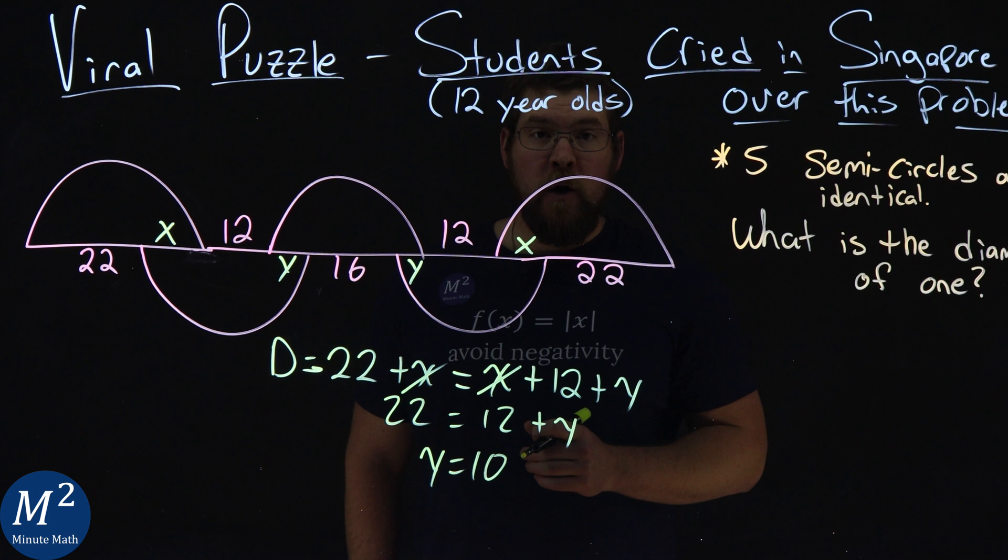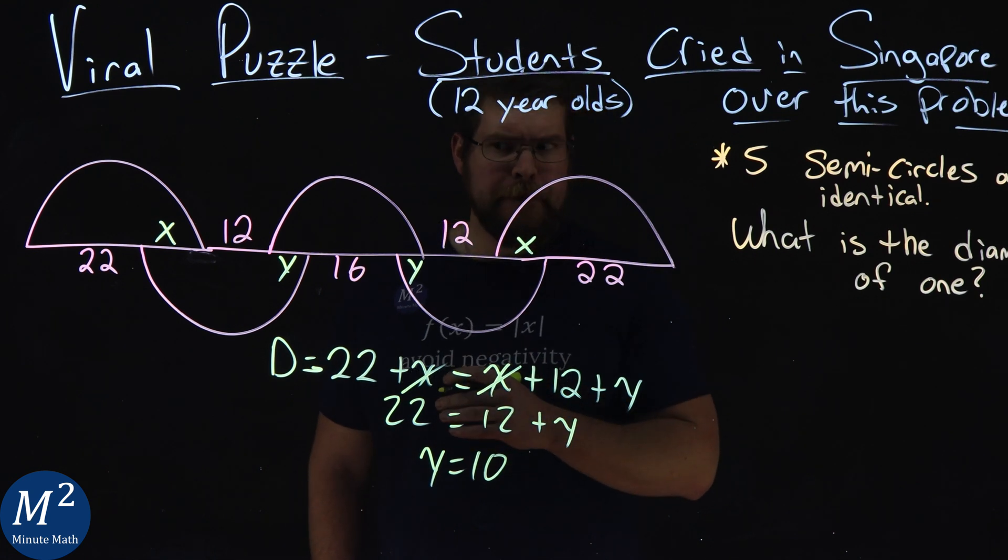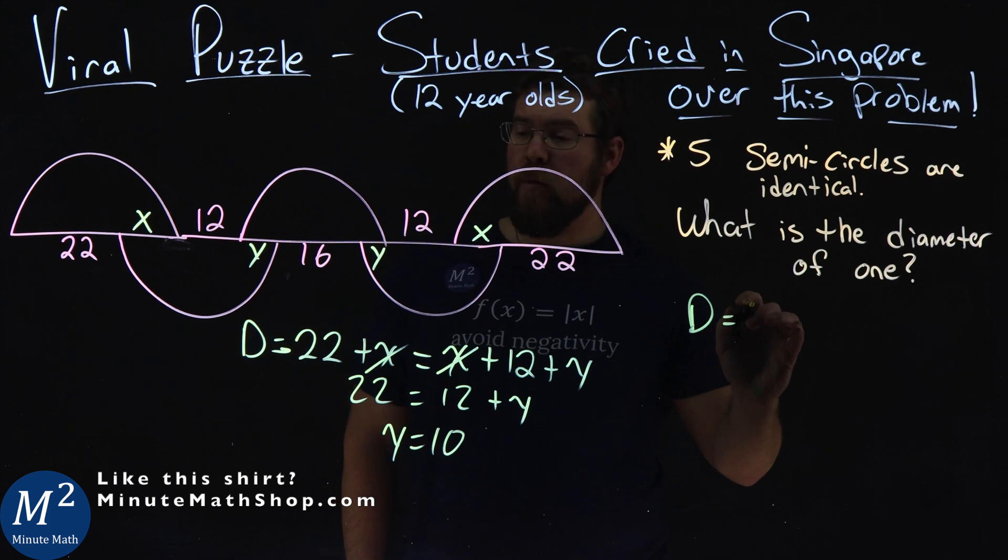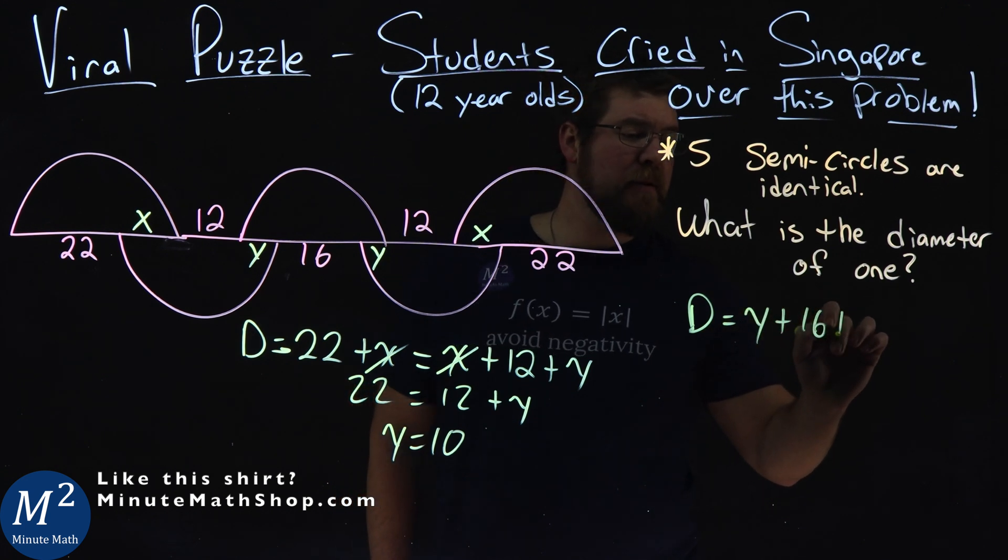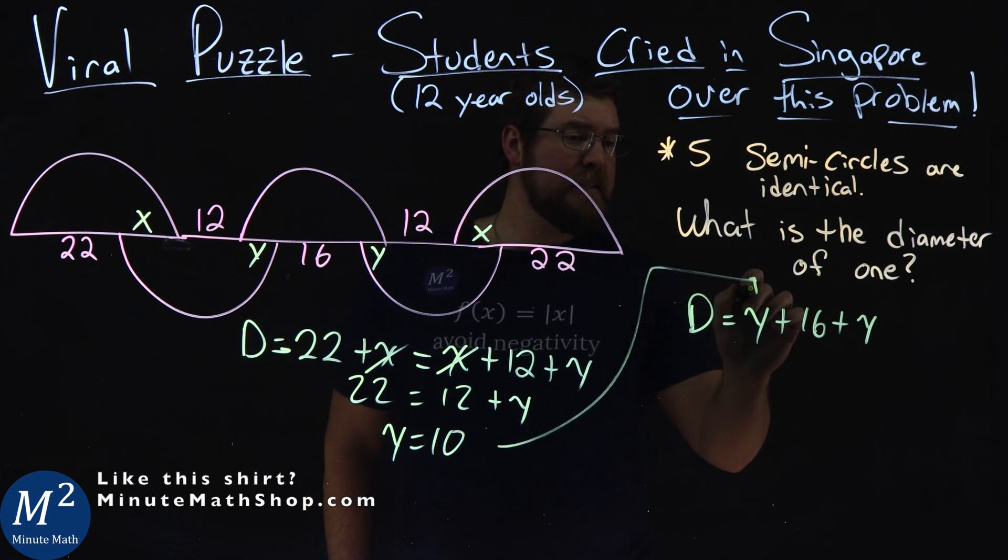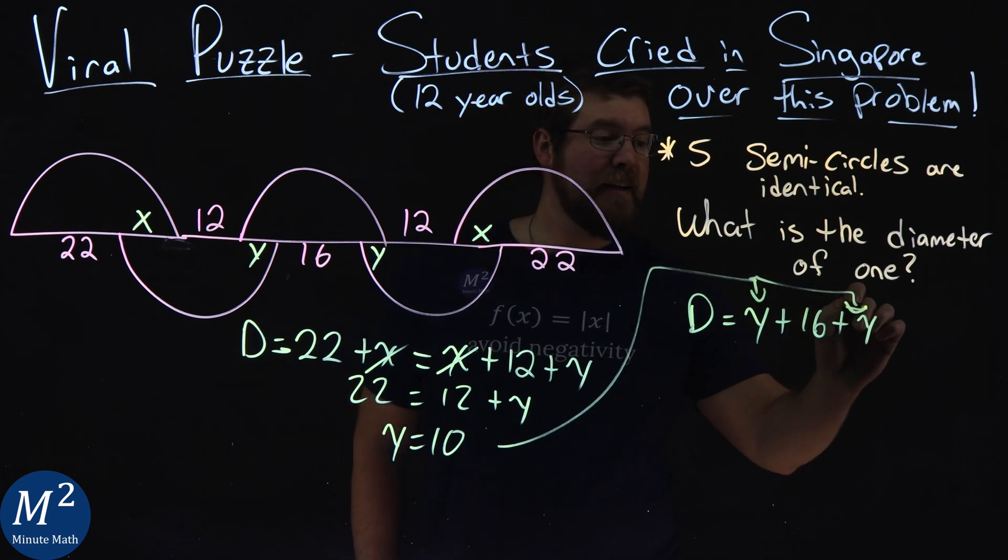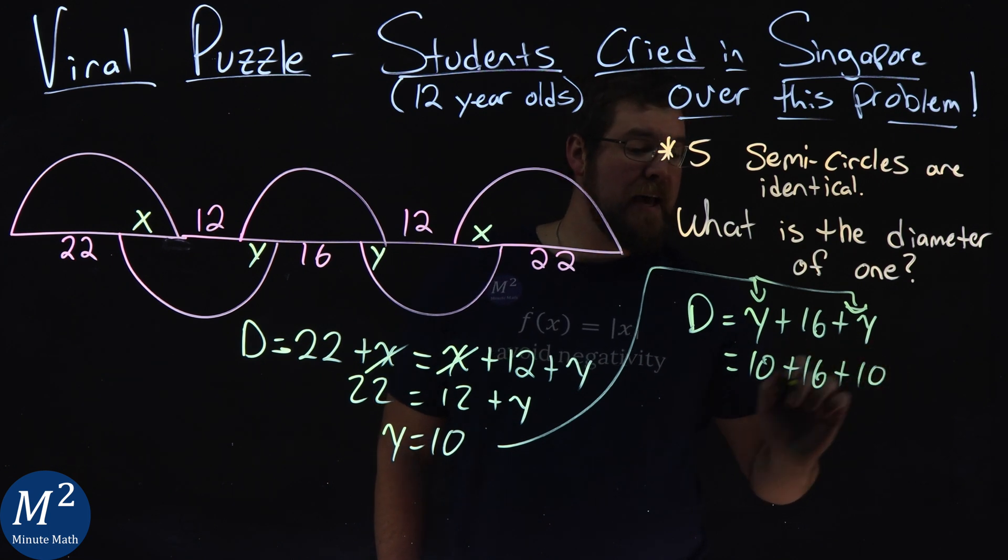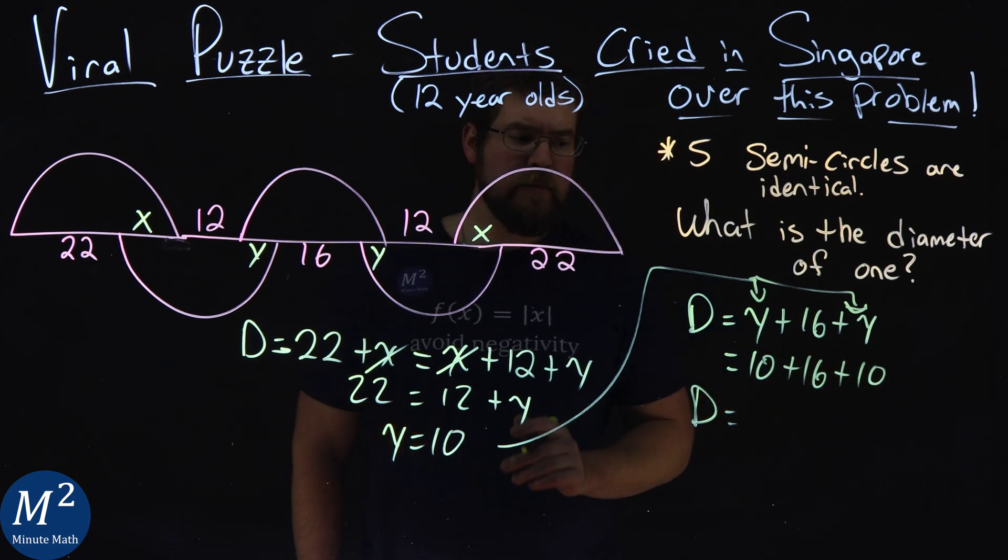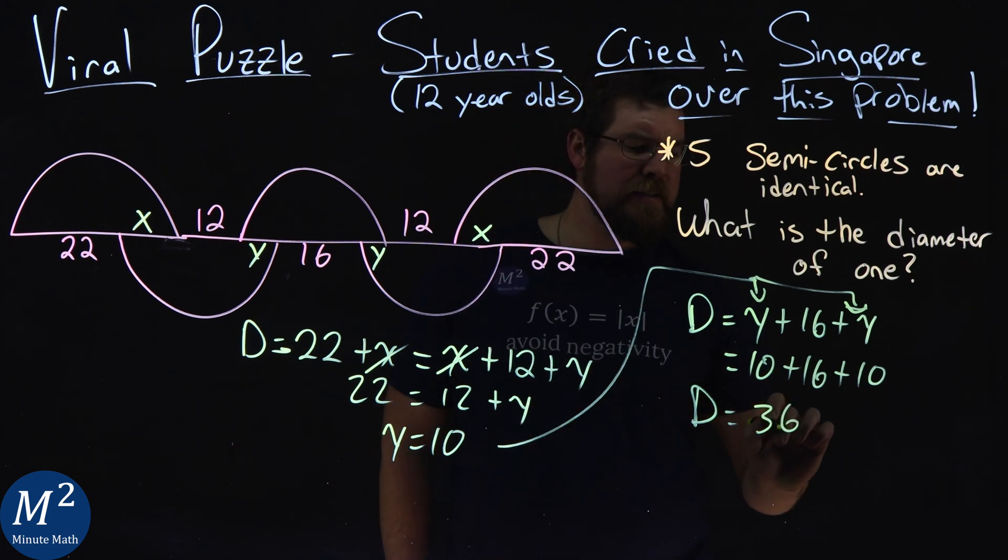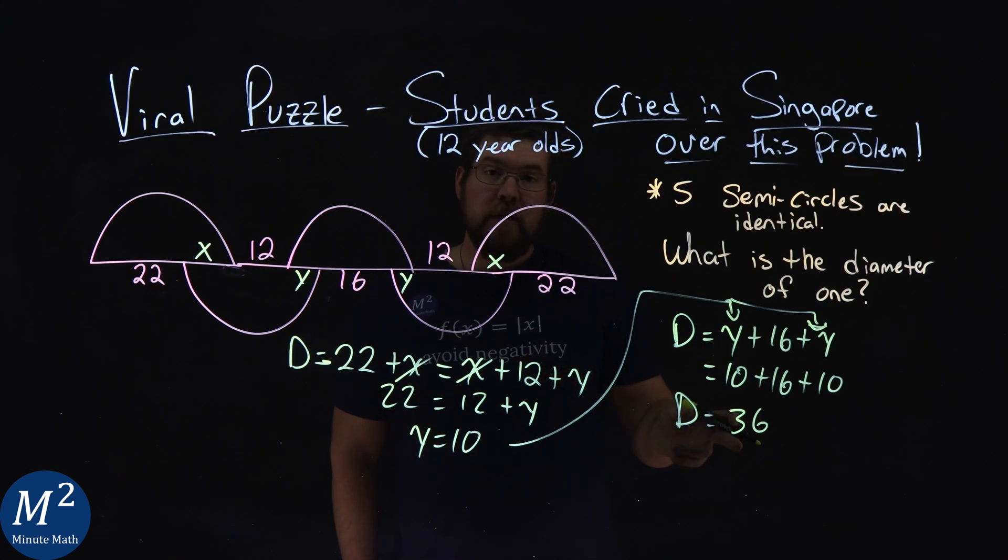And that's going to be helpful with our last part here. We know that a diameter is also equal to a y plus a 16 plus a y. Well, if y is equal to 10, we can plug that right in here. We have 10 plus a 16 plus a 10, and so our diameter, 10 plus 16 plus a 10 here is a 36. Did you get the answer of 36 for the diameter? Did you cry trying to solve it?